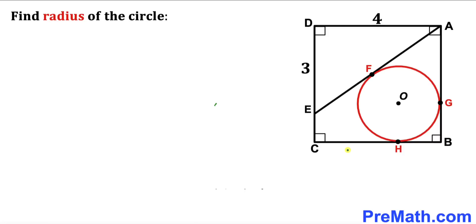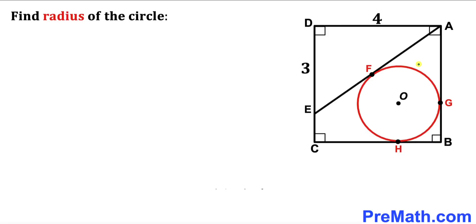In this video we have got square ABCD with a side length of 4 units. We have line segment AE such that length DE is 3 units, and a circle confined between them where points F, G, and H are the points of tangency. Our task is to calculate the radius of this circle.